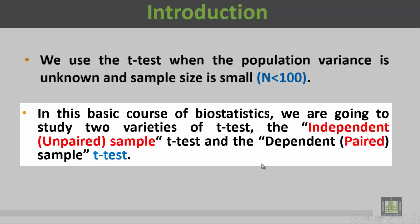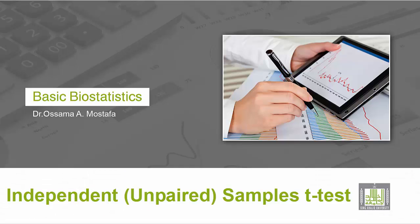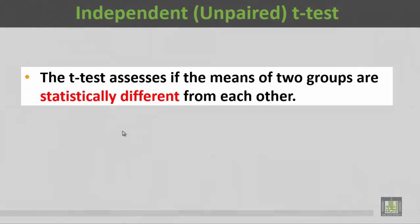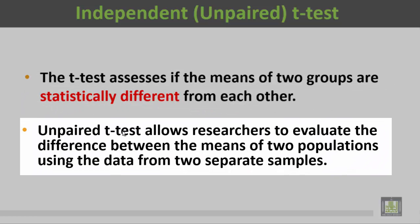In this course we are going to study two varieties of t-test: the independent or unpaired sample t-test and the dependent or paired sample. Let's start with the independent or unpaired samples t-test. The t-test assesses if the means of the two groups are statistically different from each other. The unpaired t-test allows researchers to evaluate the difference between the means of two populations using the data from two separate samples.